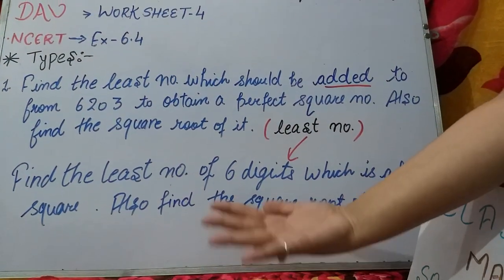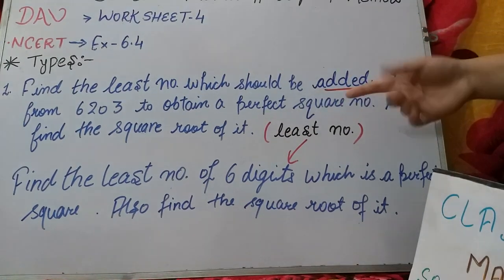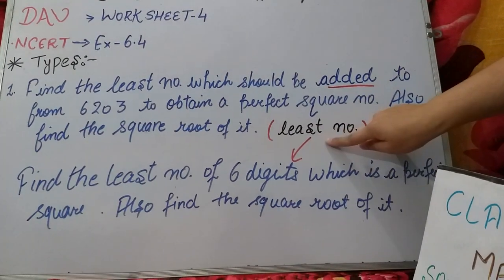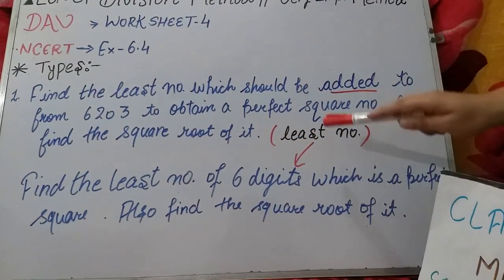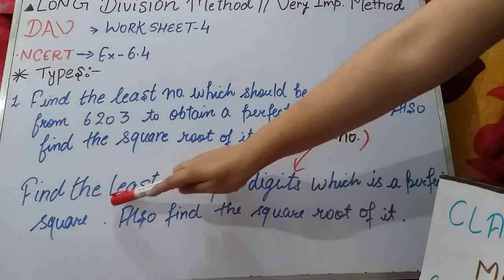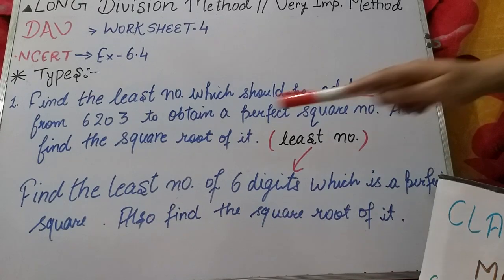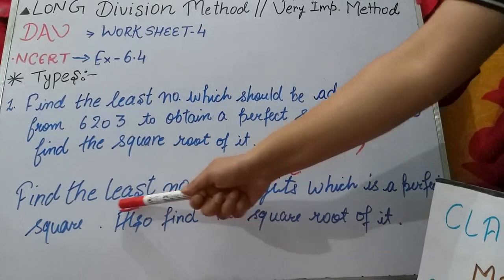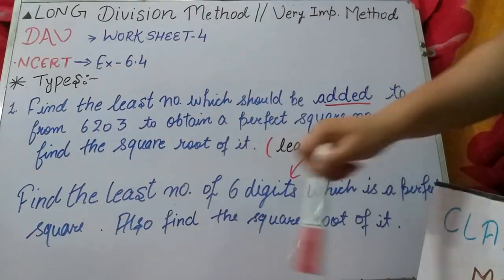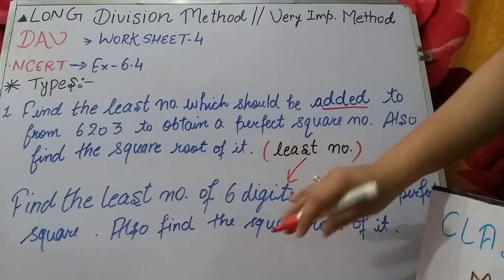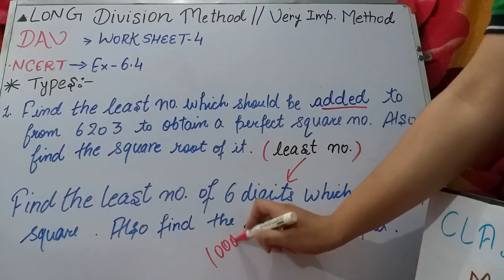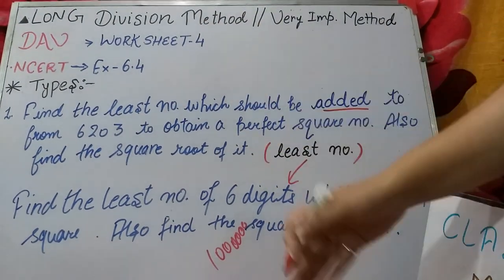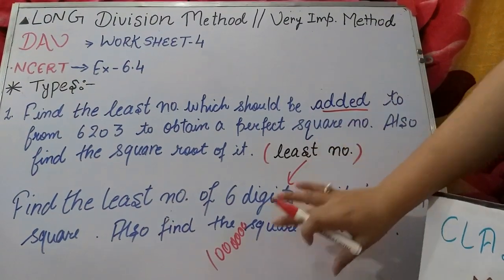We add something so that it becomes a perfect square. Remember: high is minus, low is add. Now for the least number of six digits: the greatest 6-digit number is 999999, but for the least 6-digit number we write 100000. So 100000 is your least six-digit number. Now we will apply long division to this number.